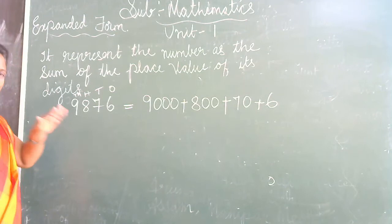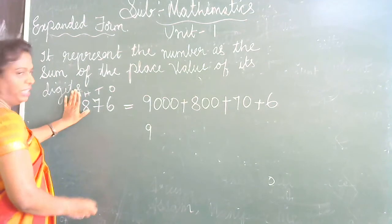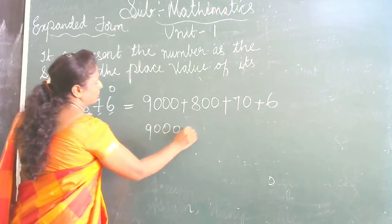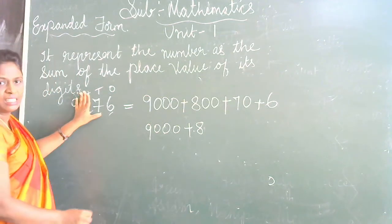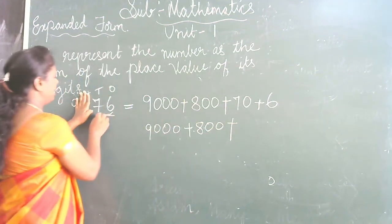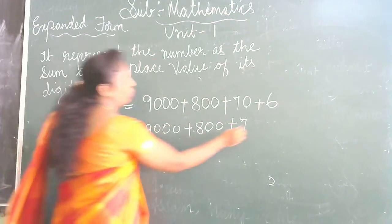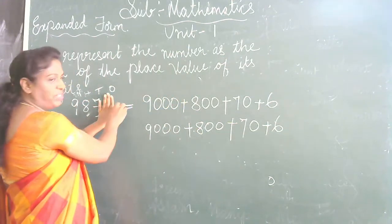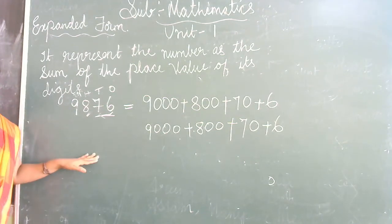Here's the easy way: write the first digit and close it, see how many digits come after — there are 3, so put 3 zeros. Then write the next digit 8, close it, see how many digits come after — 2, so put 2 zeros. Then write 7, after 7 there is 1 digit, so put 1 zero. Then write 6, after 6 there are no more digits, so leave it. This is called Expanded Form.